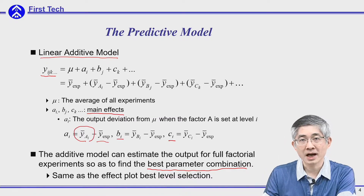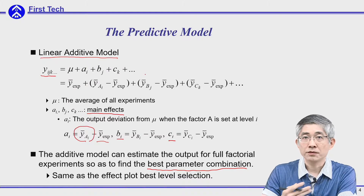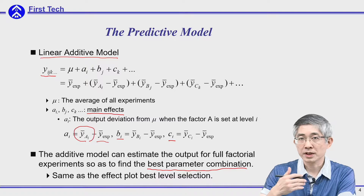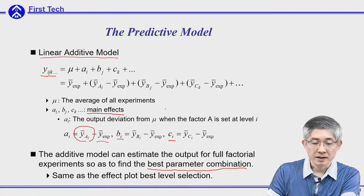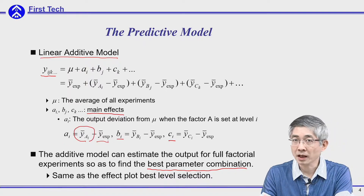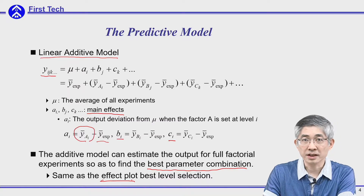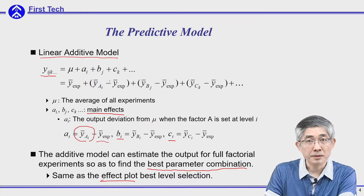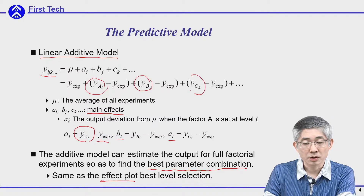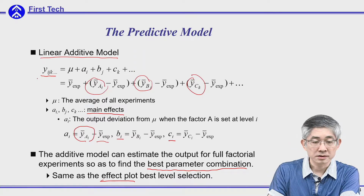The idea is you use the fractional factorial to estimate all the variables, then use these variables to predict the output in the full factorial, so you can predict the best parameter combination based on this model. The best combination of i, j, k will be the one that provides the maximum output for a, b, and c. From the effect plot, the effect plot selects the best level where Sn is maximized. If the level provides maximum Sn, the corresponding main effects will be maximized too, so the selection from the effect plot is the same as the selection from the additive model, and the summation of maximum effects will provide the best combination in the full factorial.